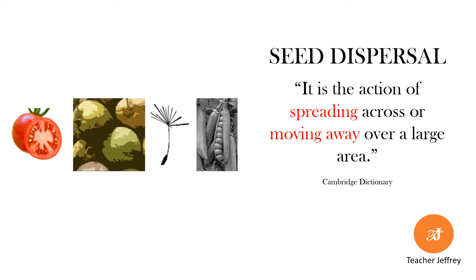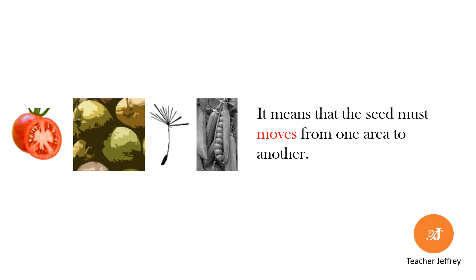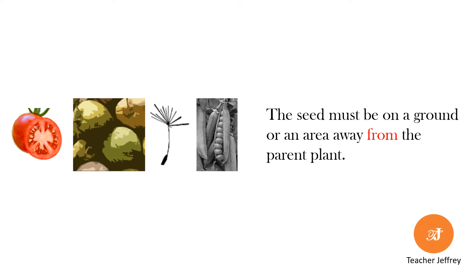We will now go to the next stage: seed dispersal. Seed dispersal is the action of spreading across or moving away over a large area — this is according to the Cambridge Dictionary. It means the seed must move from one area to another, specifically to a ground or an area away from the parent plant.